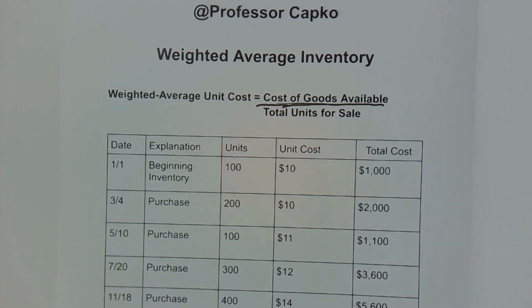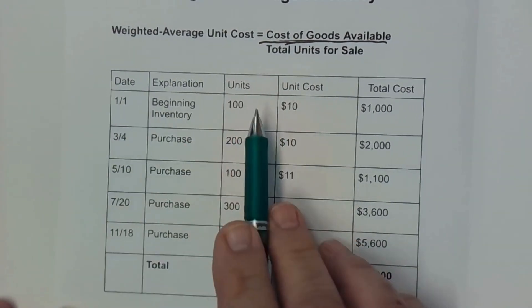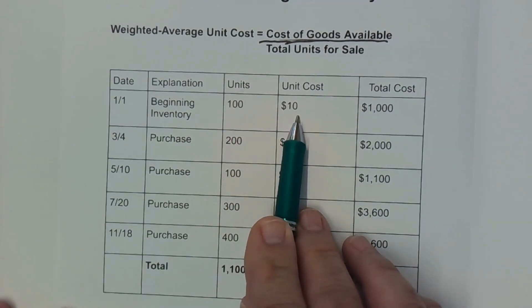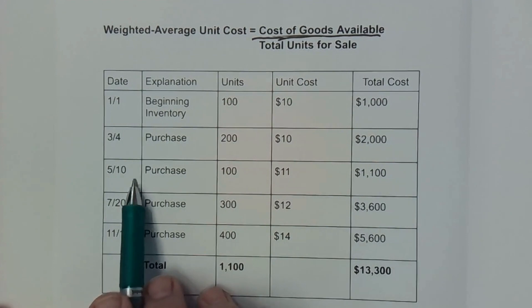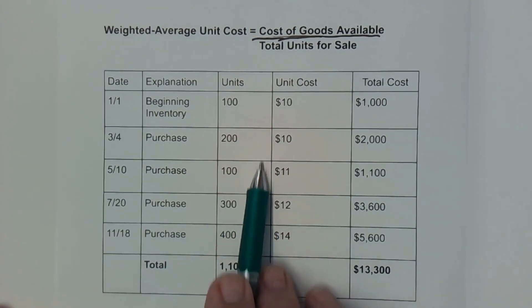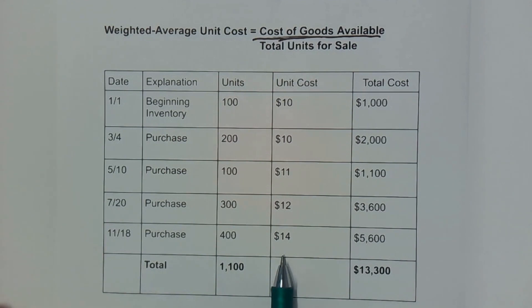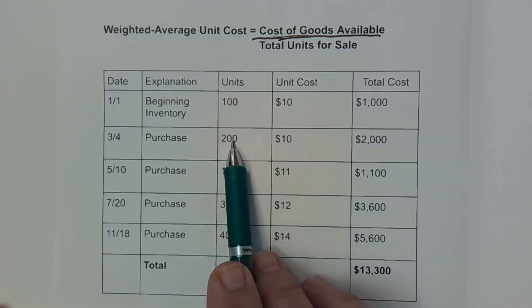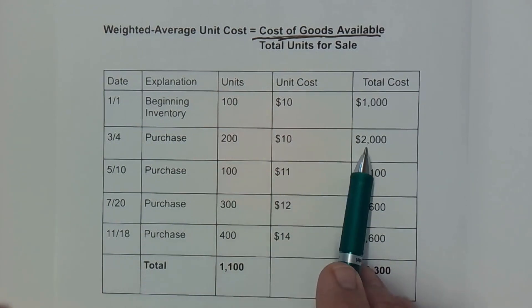I've got a chart here showing multiple purchases throughout the year. We've got a beginning inventory of 100 units, the cost is $10 per unit, so that's $1,000 as the value of the beginning inventory. Then we've got various purchases throughout the year — the number of units are listed here, and the cost per unit for those purchases. You can see the trend is going up for the costs — you might want to blame that on inflation. For each of these total costs, I'm taking the number of units and multiplying it by the cost per unit, and that gives me the total cost.